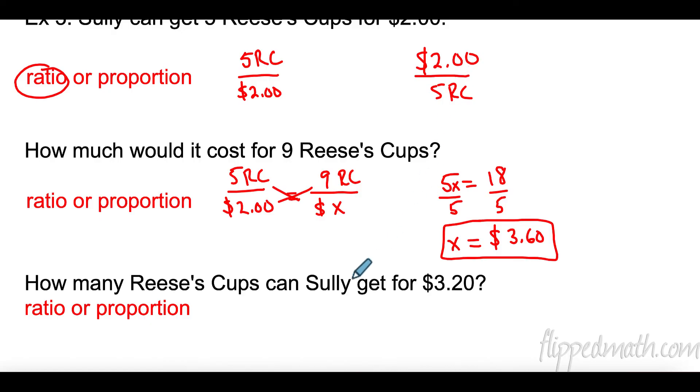Now, let's use this one. $2 for nine Reese's cups. So, I just want to show you that it doesn't matter which way you set it up. So, down here, how many Reese's cups can Sully get for $3.20? So, $3.20 goes here because, look, units must match top and bottom. So, I don't know how many Reese's cups I have on the bottom.